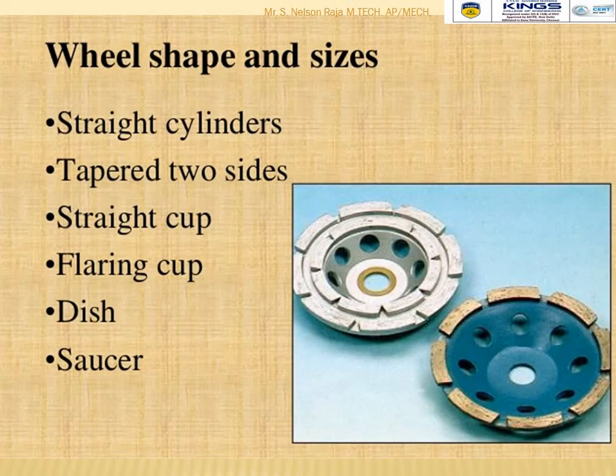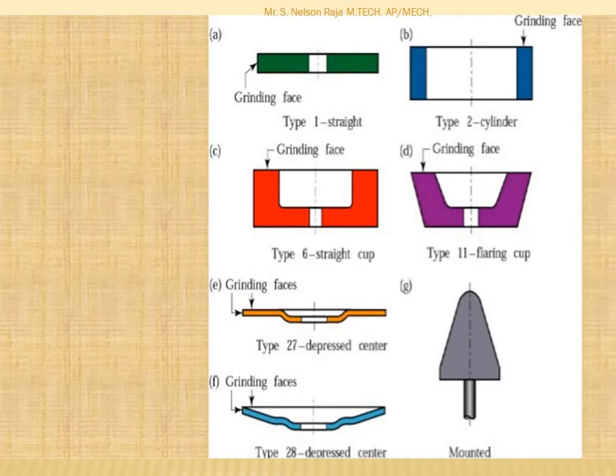Grinding wheels come in different shapes and sizes: straight, tapered side, straight cup, flaring cup, dish, and saucer. The diagrams show the straight cutting wheel, type 2 cylindrical cutting wheel, straight cup, depressed center, and mounted types.